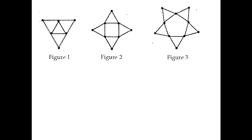In the third figure we can see a pentagon, and from each side of the pentagon a triangle is drawn. The number of sticks equals the number of sides of those triangles. Since there are 5 triangles, the total number of sticks is 5 × 3 = 15.